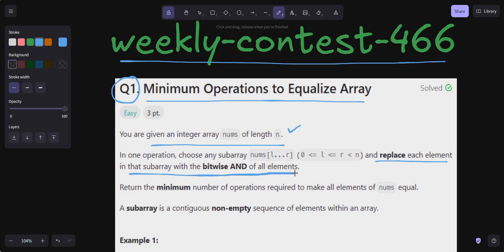We have to return the minimum number of operations required to make all the elements of nums equal. A subarray is a contiguous non-empty sequence of elements within an array.